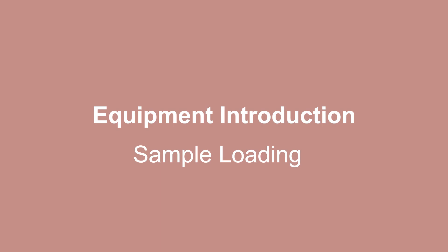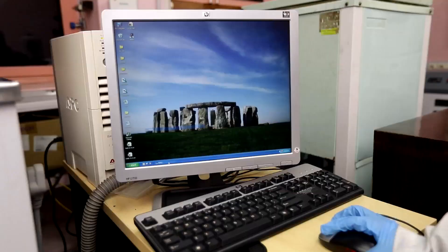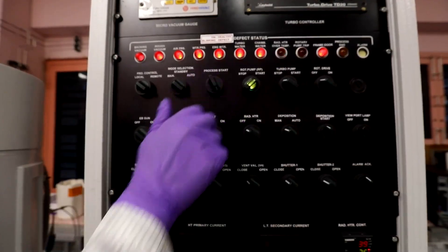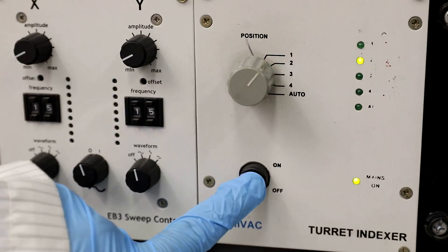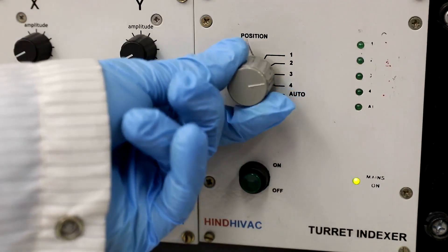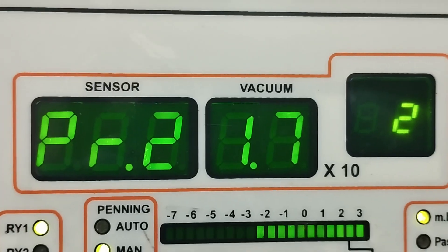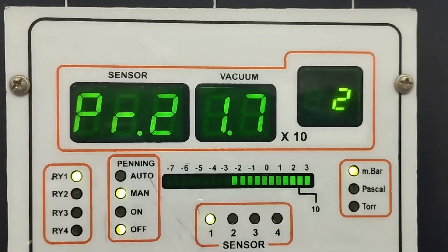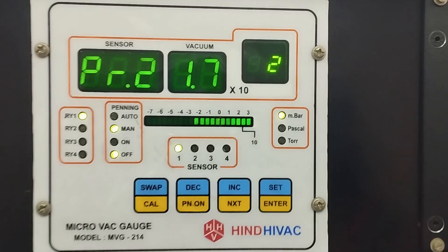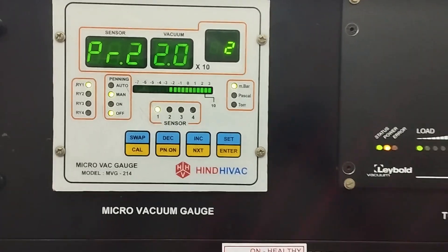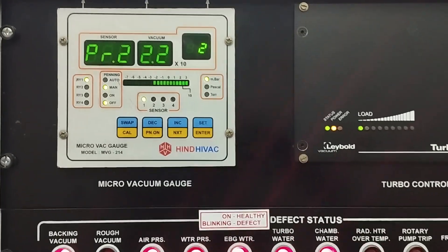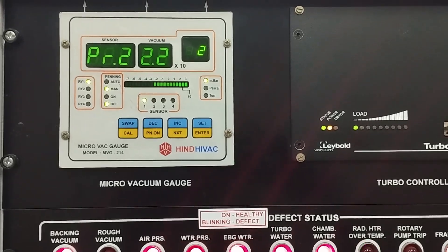Equipment introduction and sample loading. Switch on the system and vent the chamber for sample loading. When the chamber pressure reads 1000 mbar atmospheric pressure, we can open the chamber to load the sample inside the chamber.